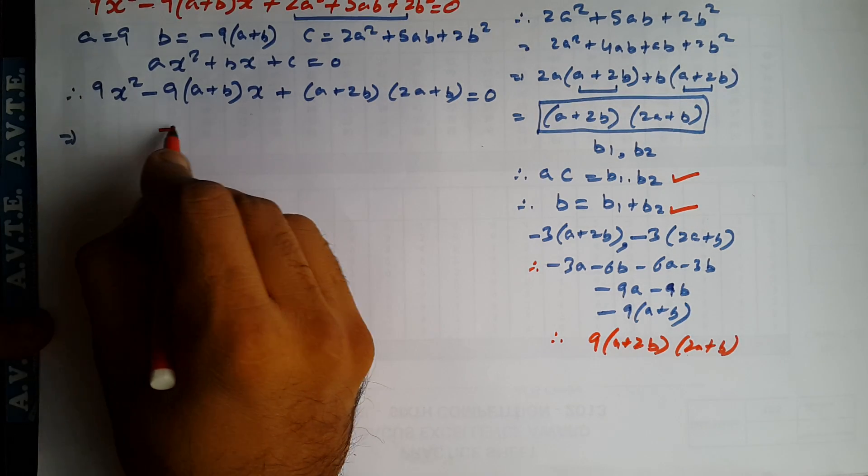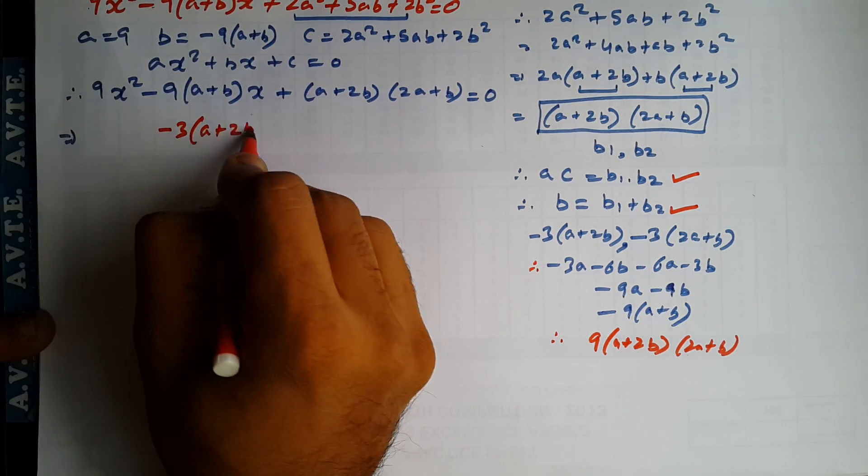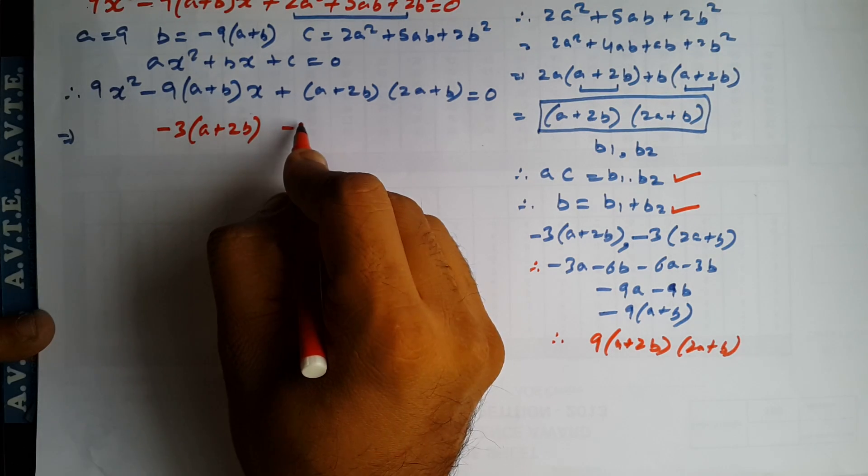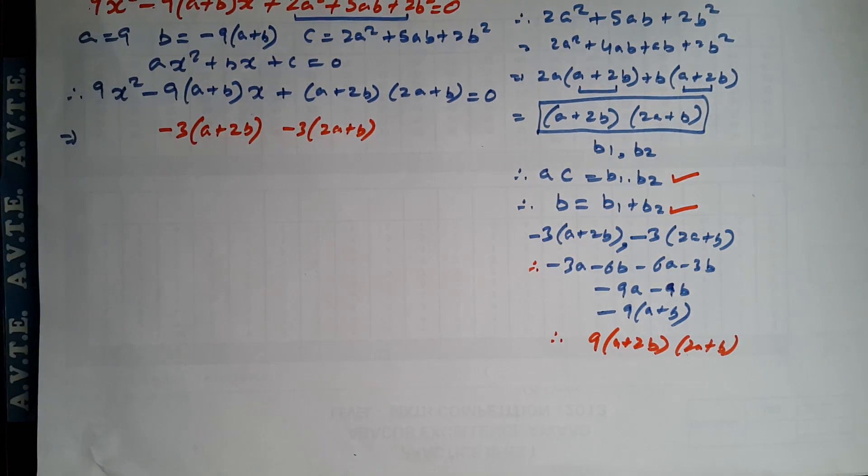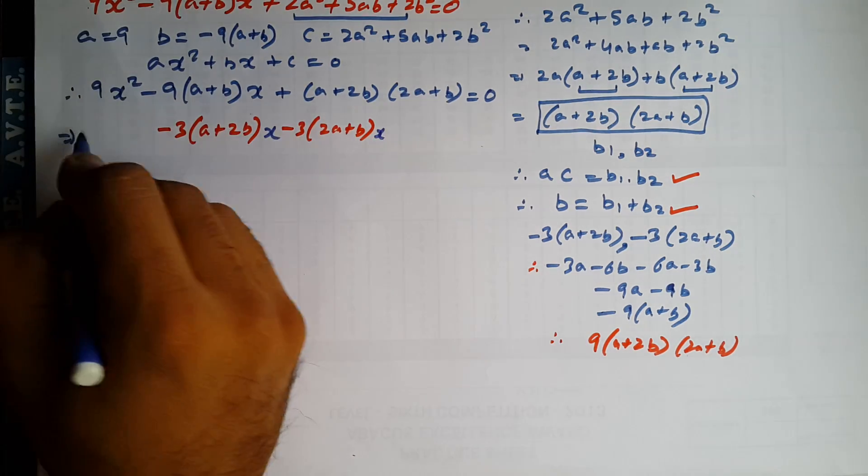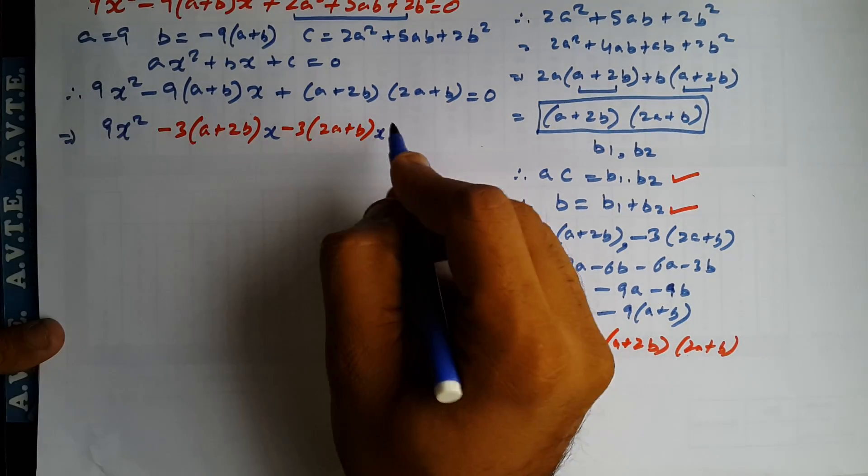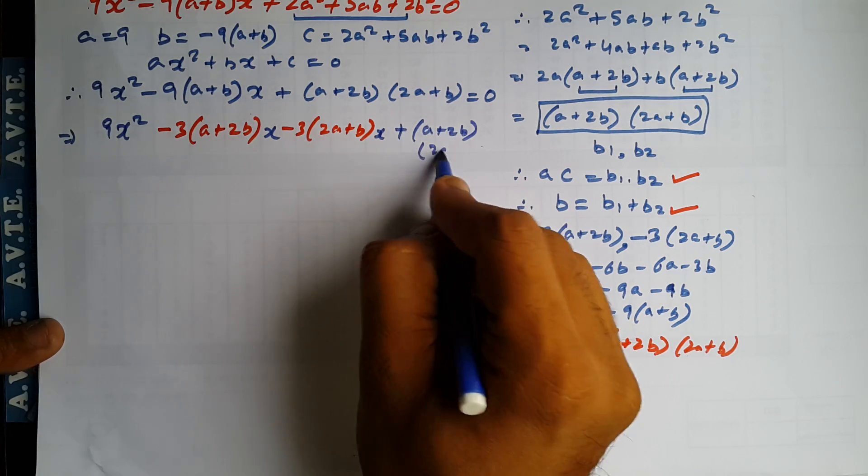It means your factors are minus 3A plus 2B and minus 3 into 2A plus B. Don't forget to put X. This is 9X squared. And this is A plus 2B and 2A plus B.